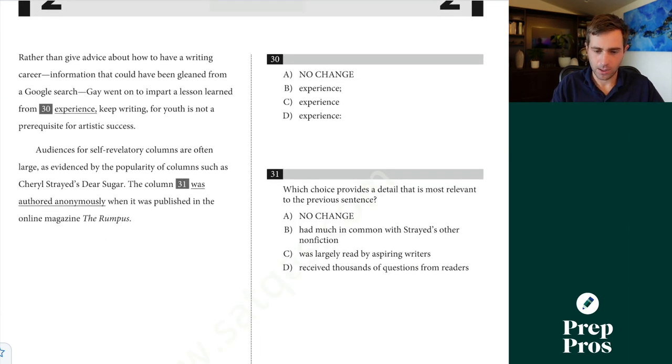All right, 30 here, so punctuation question. Rather than give advice about how to have a writing career, information that could have been gleaned from a google search, Gay went on to impart a lesson learned from experience. Keep writing for youth is not a prerequisite for artistic success. So this is going to be D. We are giving an explanation, definition, clarification of what that lesson learned from experience is, so we need to use the colon there. Keep writing for youth is not a prerequisite for artistic expense. We're explaining what that lesson was.